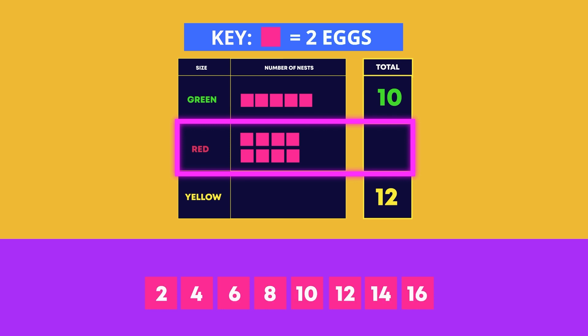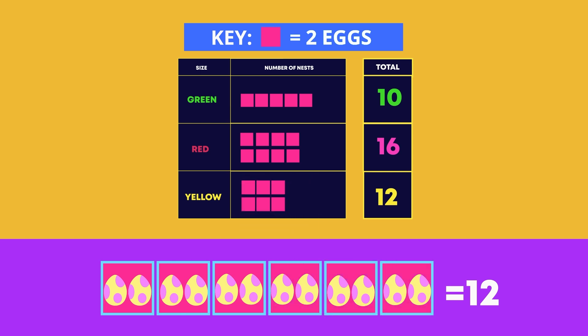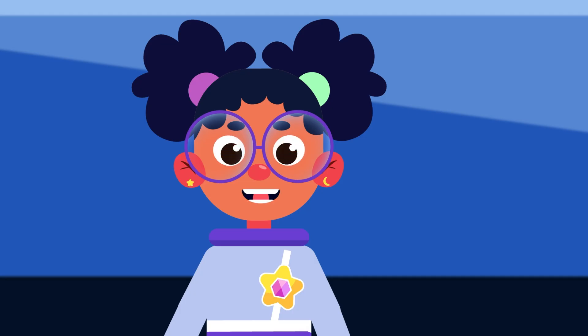Eight sets of two is equal to 16. In this nest there are 12 yellow eggs. How many squares will we need to show 12? Well, we need to see how many twos make up 12. Two, four, six, eight, ten, twelve. Six squares make up 12. Great work! Are you ready to see the last pictogram?